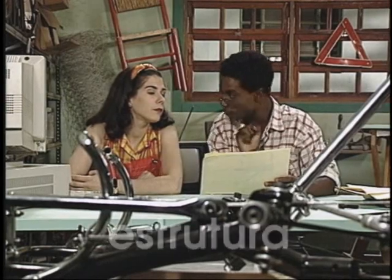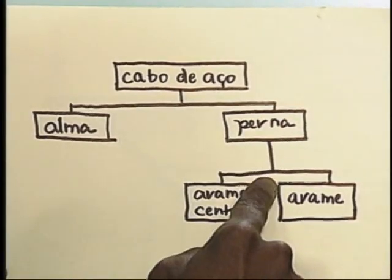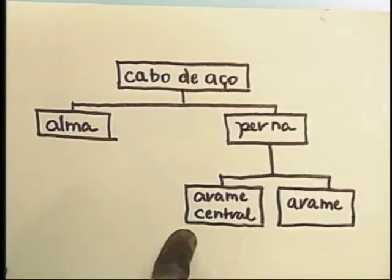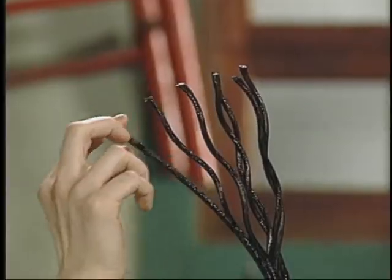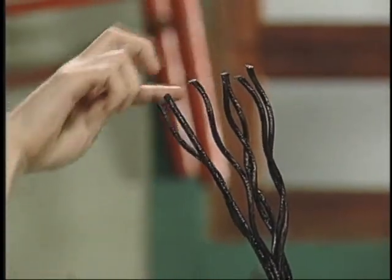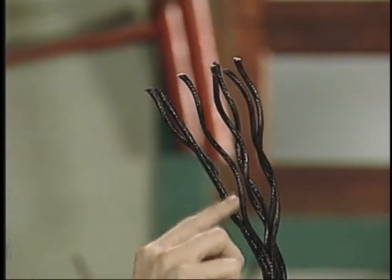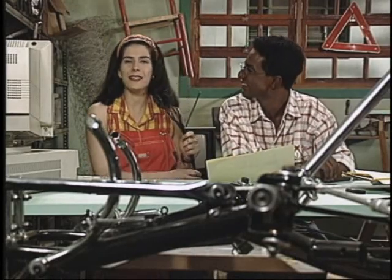Com este desenho, você vai entender como é a estrutura de um cabo de aço. Ele é composto de alma e perna. A perna é formada por um arame central e por outros arames em torno dele. Esta parte central é a alma. As partes em torno da alma são as pernas. E cada perna é formada por um arame central e pelos arames em torno dele.